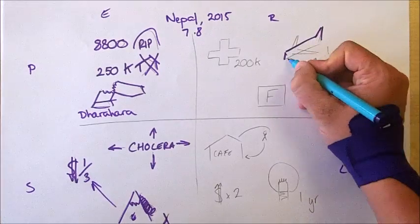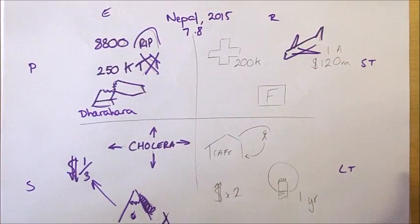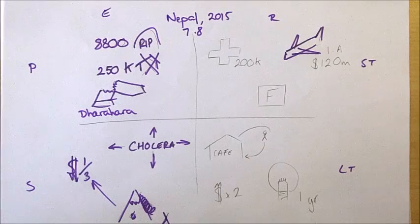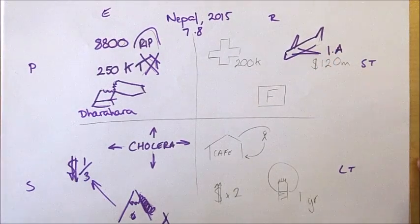If we start off with the idea of international aid, remember Christchurch only received a very small amount of international aid, around seven million dollars, due to the fact it's a high-income country and therefore was able to support itself.